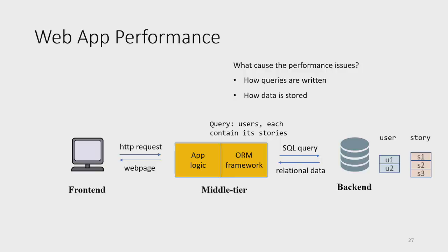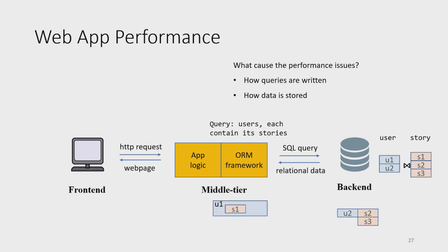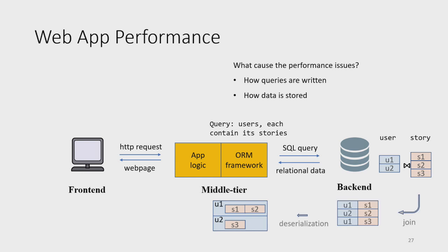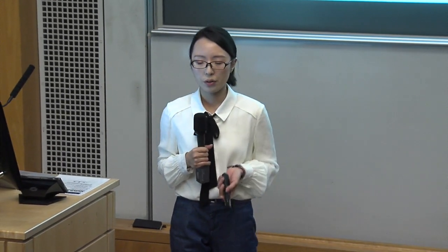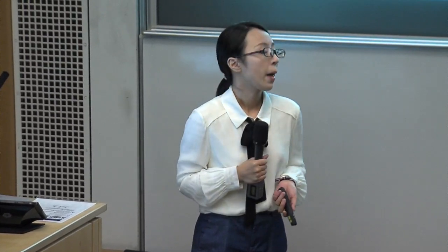The second reason is how data is stored. If the app wants to show a list of users each containing stories, the back-end stores a user table and a story table. To answer this query, it performs a join and converts the relational result into nested objects. With large numbers of users and stories, both the join and deserialization can be very slow. If we can pre-compute and store the join result in memory, we save join time; if we store the nested object directly, we save deserialization time. However, these nested objects may not be optimal for all queries, making it challenging to find the best storage model.